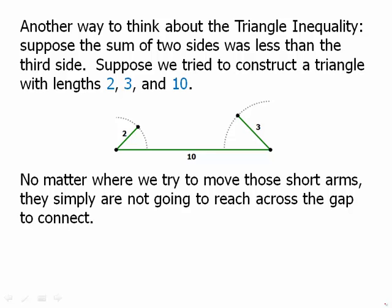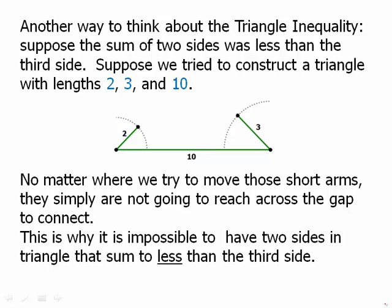So this does not form a legitimate triangle. It has to be closed. The three line segments all have to meet and enclose an area in order for it to be a triangle. So this will not work as a triangle. And this is why it's impossible to have two sides in a triangle that's sum to less than the third side.